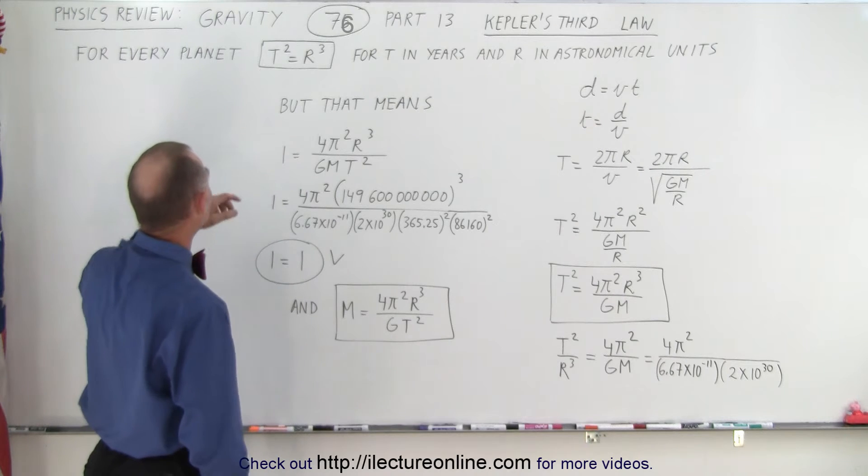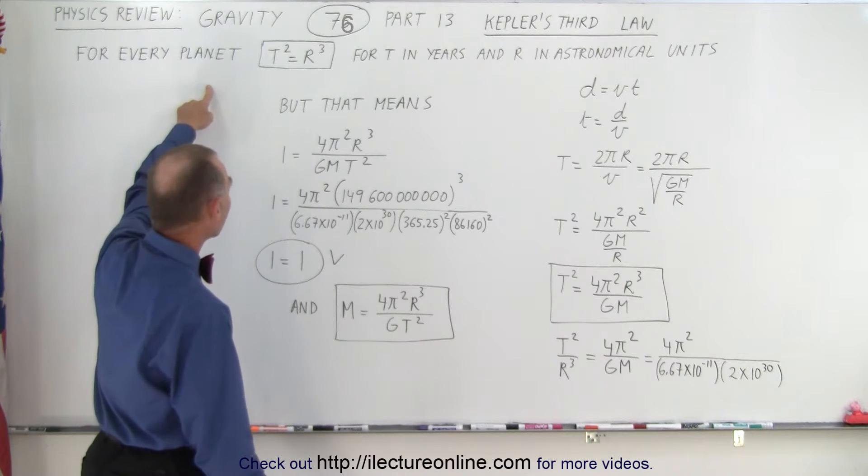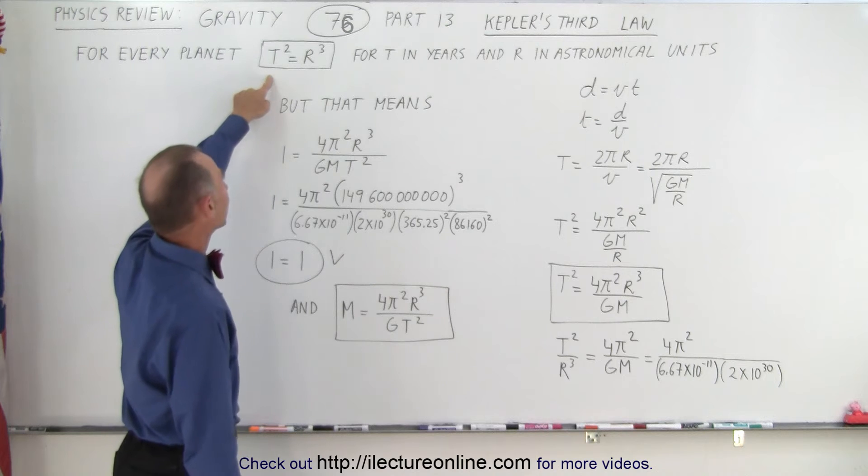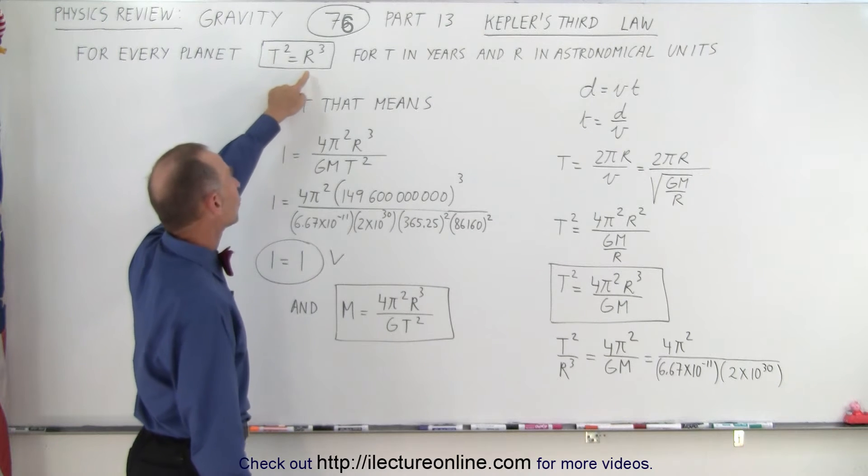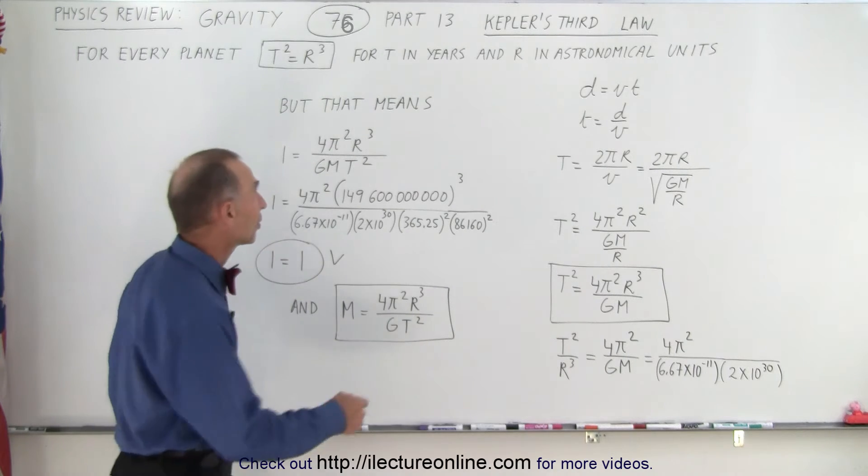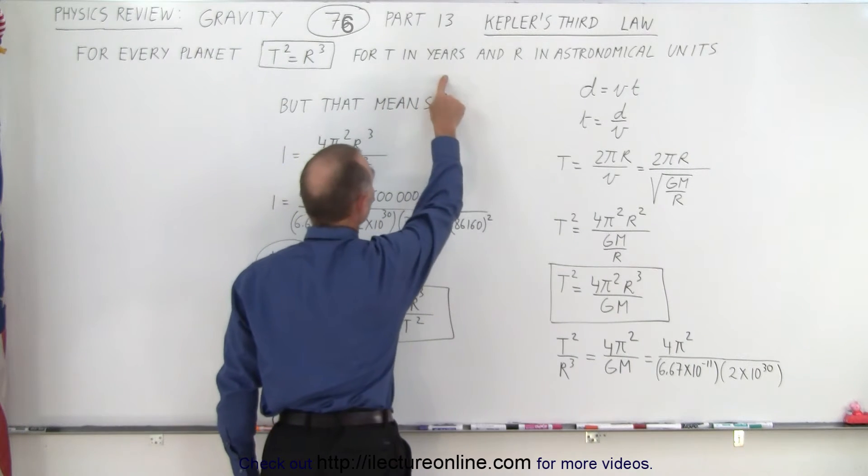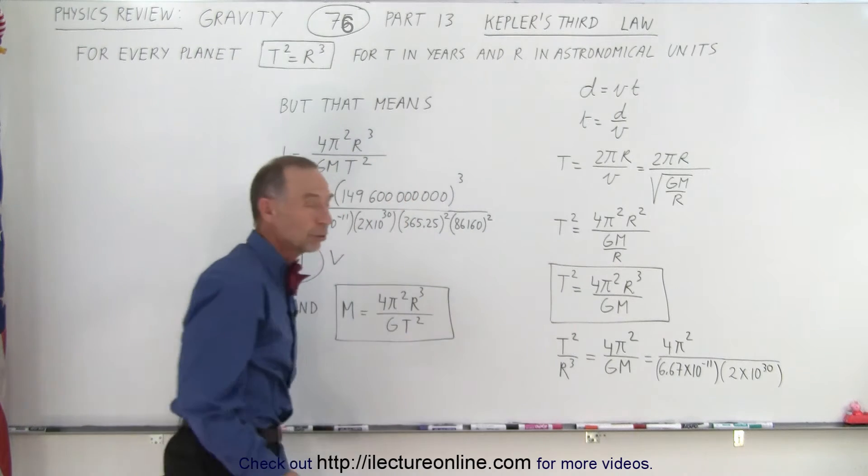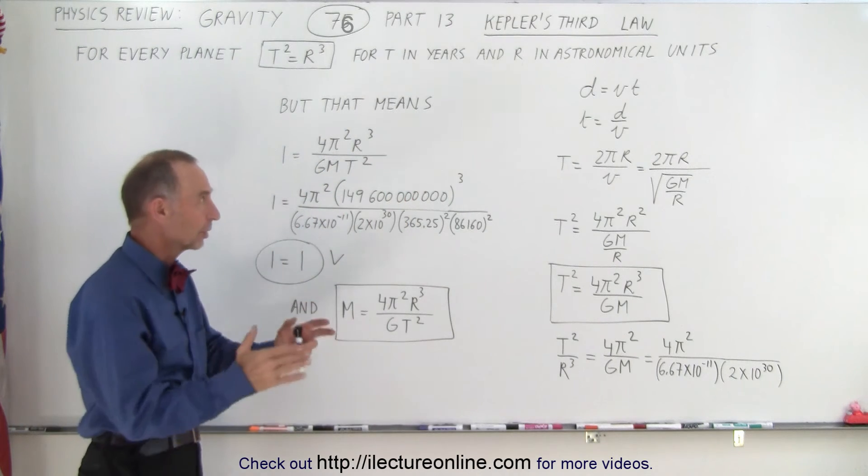It turns out that he discovered that for every planet revolving around the sun, the period squared equals the distance between the sun and the object cubed, if we consider T expressed in years and R expressed in astronomical units, which is the distance between the earth and the sun.